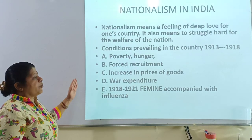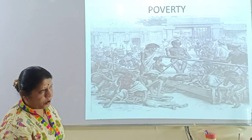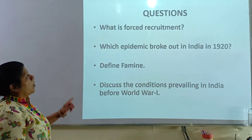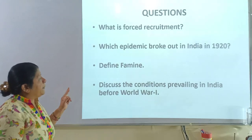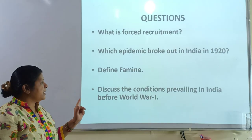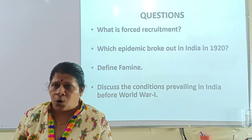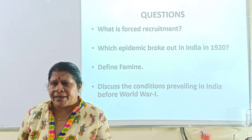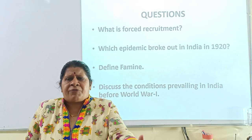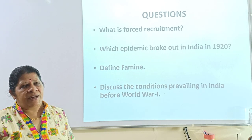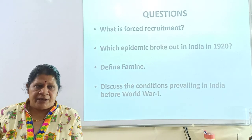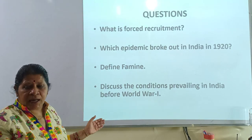It is important to remember, from the board exam point of view, there are some questions which are important — one mark and three mark. These include: What is forced recruitment? Which epidemic broke out in India in 1920? Define famine. And the next question is: discuss the conditions prevailing in India before World War I. They may also ask about political conditions, economic conditions, or why there was chaos in the country. It can be asked in different ways — or write a short note on the conditions prevailing between 1913 to 1914. Whatever I have explained up till now becomes the answer to that question.